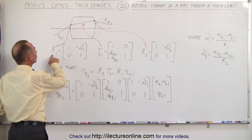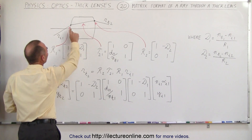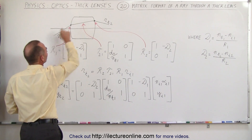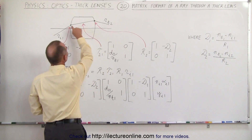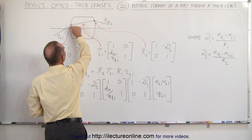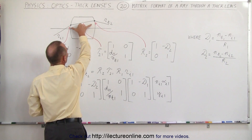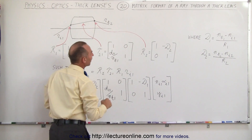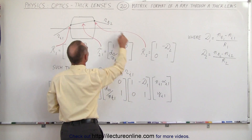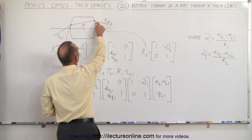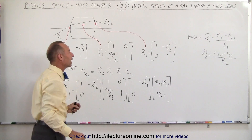We have R1, the refracting matrix that tells us what happens across the front boundary. We have the transition matrix that tells us what happens from one side of the lens to the other. And finally we have the third matrix, the refracting matrix on the second boundary, which allows us to calculate what happens across that back boundary.